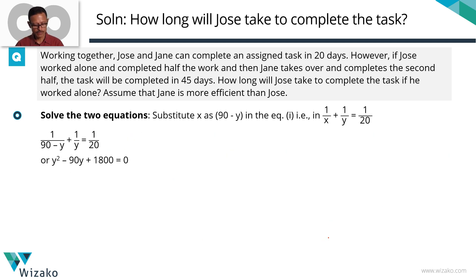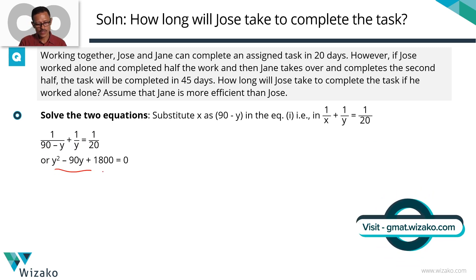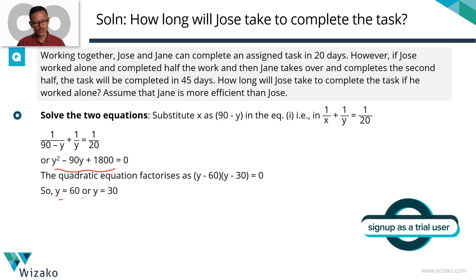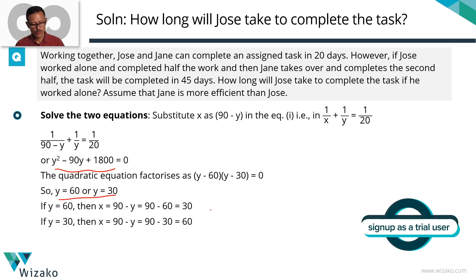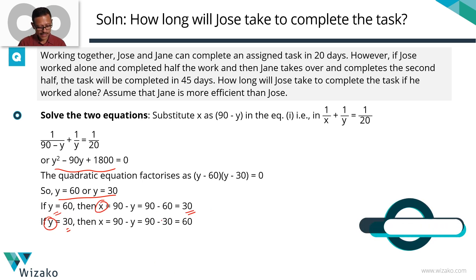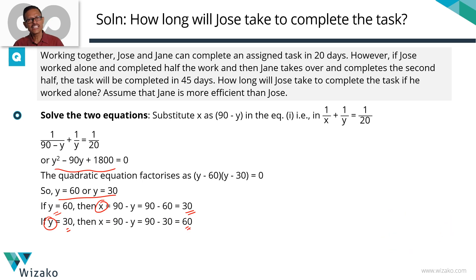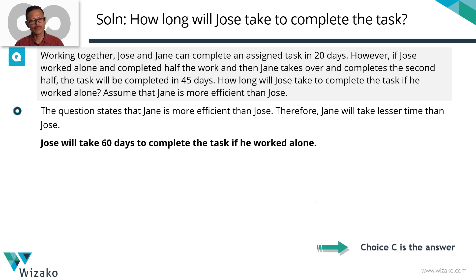To recap the solution: we framed the equations, took the common denominator Y(90 − Y), cross-multiplied, and ended up with a quadratic. Factorizing gave Y = 60 or Y = 30. Since Jane must be more efficient — taking less time — Y = 30 and X = 60. The number of days taken by Joe to finish the task is 60. Choice C is the answer. This was an interesting question because the second equation was not a typical work-time fraction equation.